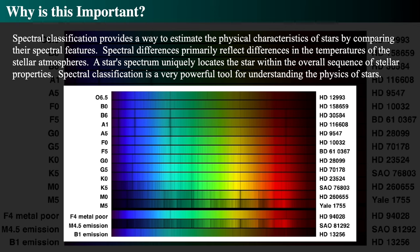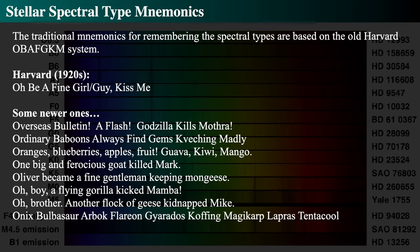People have long tried to remember OBAFGKM, and undergraduates in astronomy have come up with all sorts of mnemonics. Some are good, some are bad, some are PC and some are not so appropriate today. The old ones from Harvard in the 1920s were things like 'Oh Be A Fine Girl Kiss Me' or 'Oh Be A Fine Guy Kiss Me.' My favorite that I came up with is 'Overseas Bulletin: A Flash — Godzilla Kills Mothra.' You can make up your own and post them on the YouTube channel — I'd love to see them.